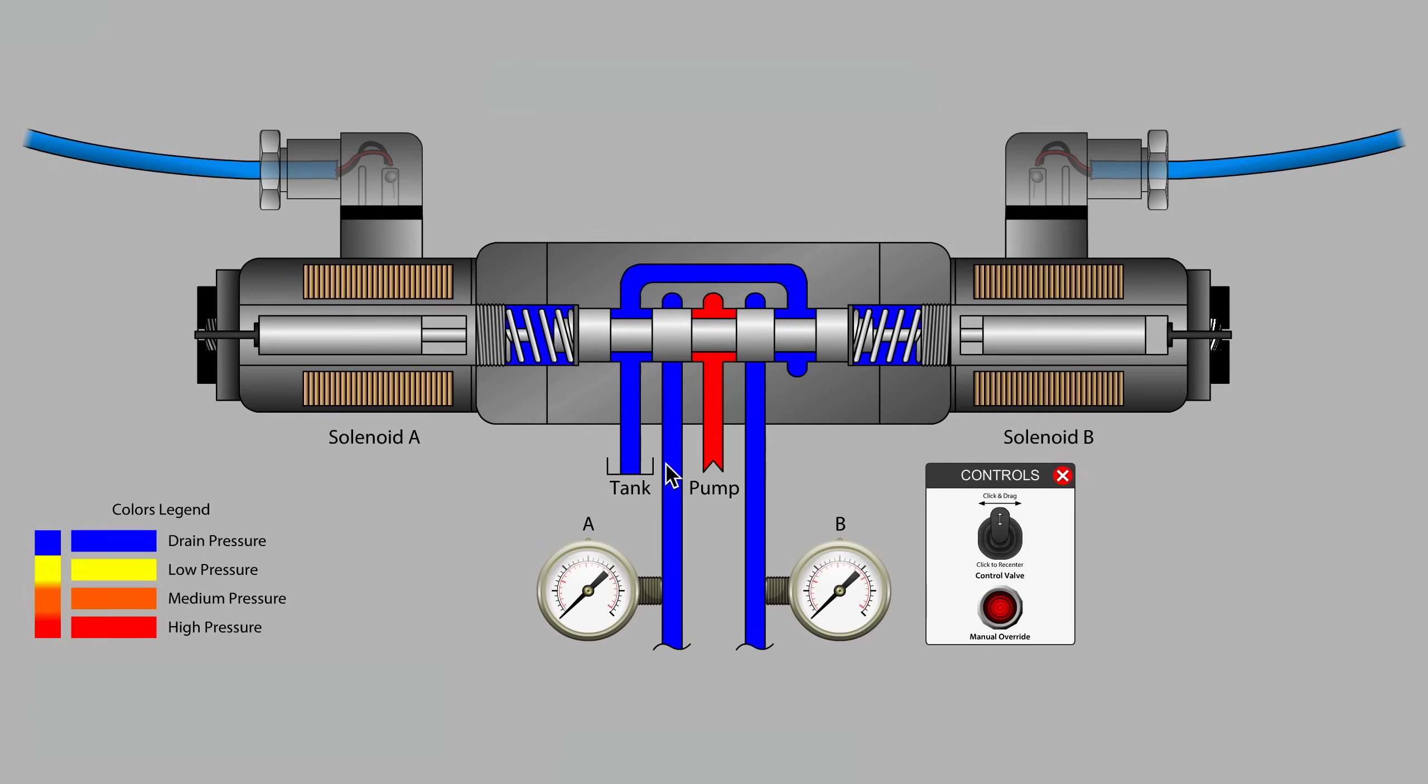The lines with the gauges labeled A and B are the work ports that typically connect to a hydraulic cylinder or motor. When we energize the solenoid coil on the left side of the valve, an electromagnetic field is created.